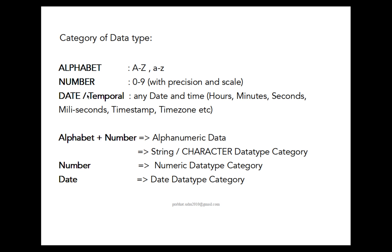Various types of data are alphabet, that is capital A to Z and small a to z, and the numbers from 0 to 9 that may have precision and scale, and date or temporal that may contain date, time, hour, minutes, seconds, milliseconds, timestamp, time zone, etc. Combined alphabet and numbers form alphanumeric string or character data type category, number forms the numeric data type category, and date comes under the date data type category.